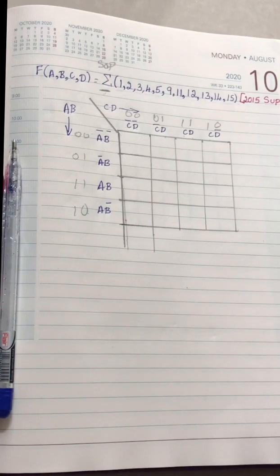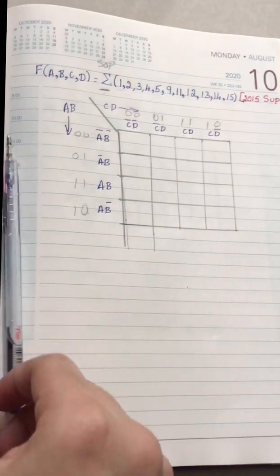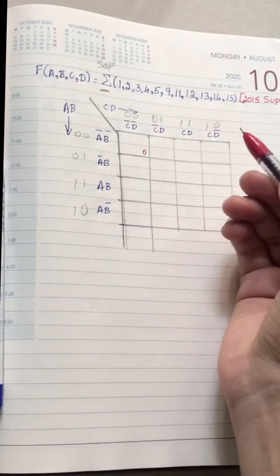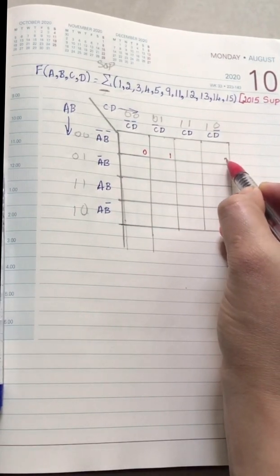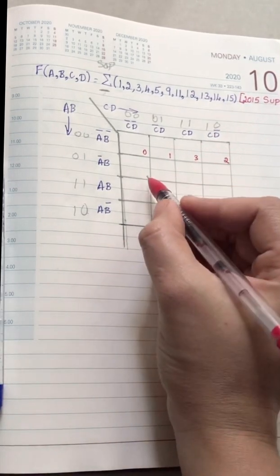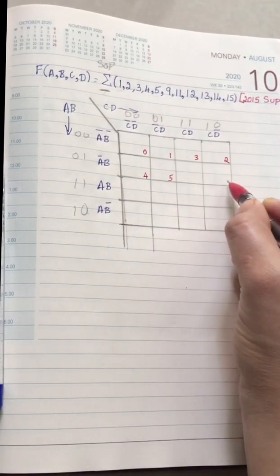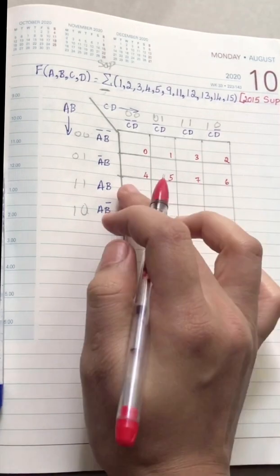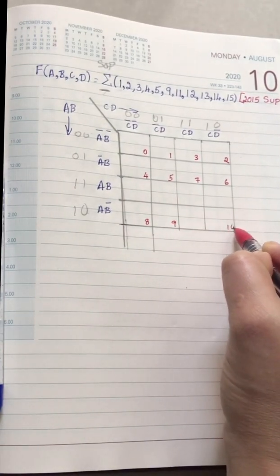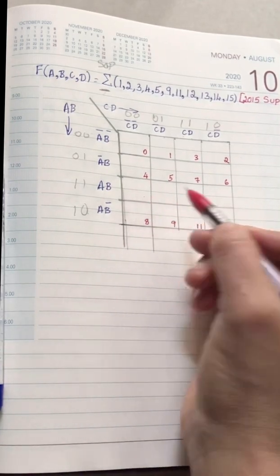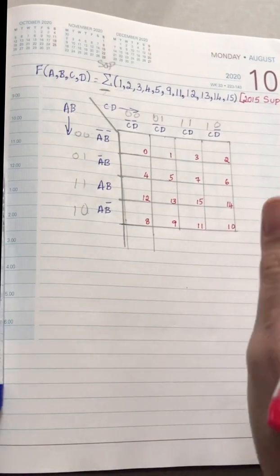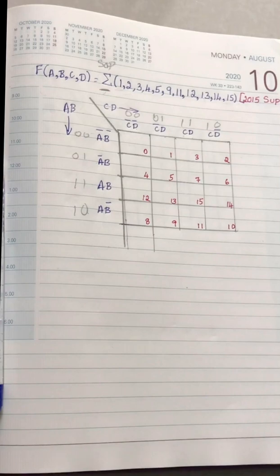Next you need to label each and every square. The first square is 0, then 1, then skip to the last one: 2, then 3. Follow this format across all columns. So after 3 comes 4, 5, then 6, 7. Then go to the last row: 8, 9, 10, 11. Then the third row: 12, 13, 14, and 15. This is the standard numbering.